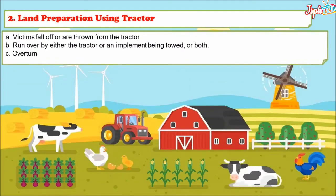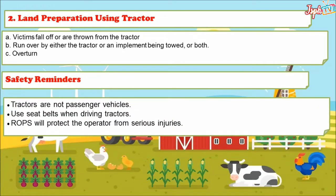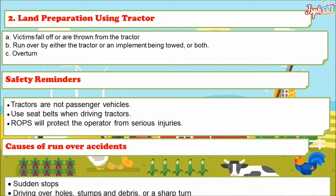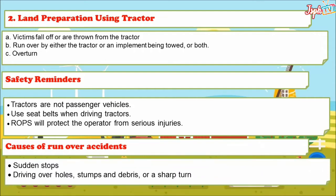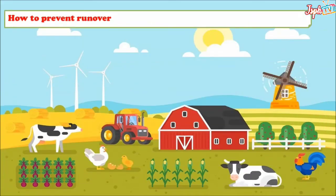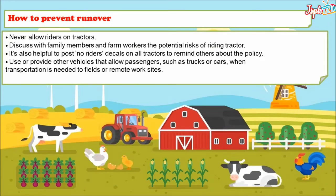For land preparation using a tractor, victims may fall off or be thrown from the tractor, run over by either the tractor or implement being towed, or be involved in an overturn. Safety reminders: tractors are not passenger vehicles. Use seat belts when driving tractors, as they protect the operator from serious injuries. Causes of run-over accidents include sudden stops, driving over holes, stumps and debris, and sharp turns. To prevent run-overs, never allow riders on tractors. Discuss with family members and farm workers the potential risk of riding a tractor, and post no-rider decals on all tractors. Use other vehicles that allow passengers such as trucks or cars when transportation is needed.